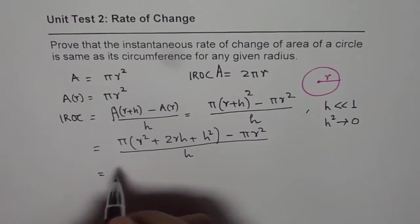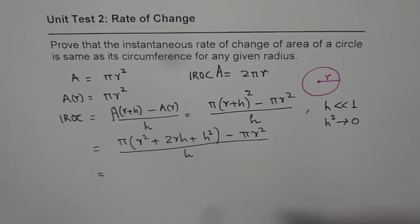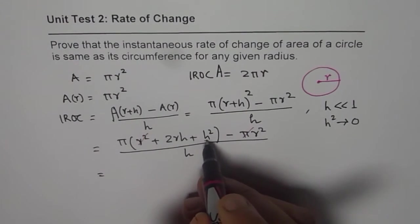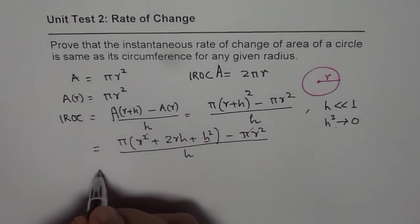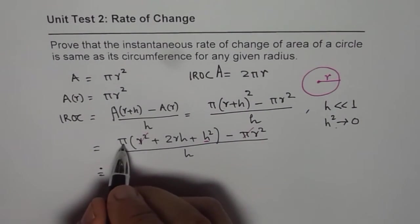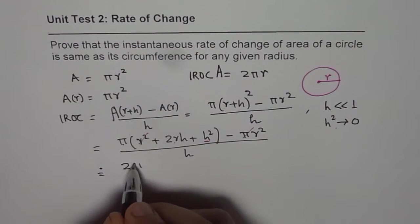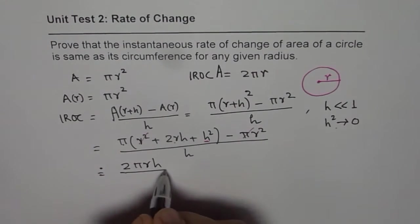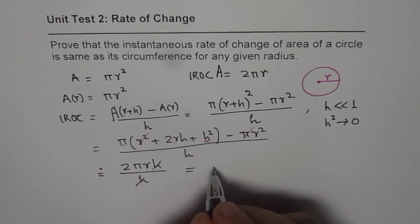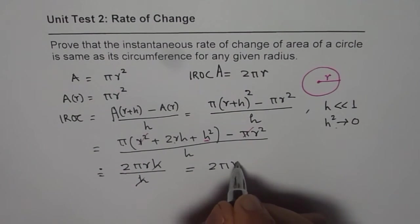Now pi r square and pi r square cancel out. h is approaching 0. Therefore, we can estimate this as 2 pi r h divided by h and that is equals to, h and h cancels, 2 pi r. Do you see?